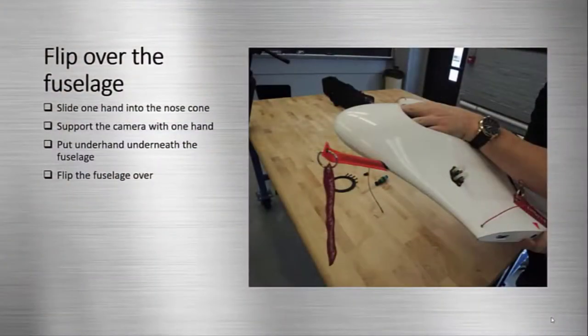To flip the fuselage over, first slide one hand into the nose cone to support the sensor. Use the other hand to support underneath the fuselage and flip it over.